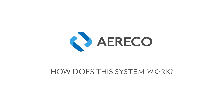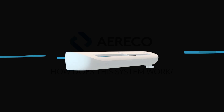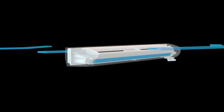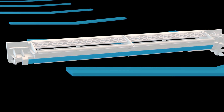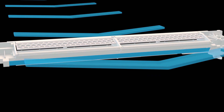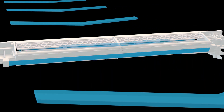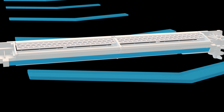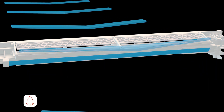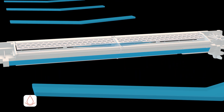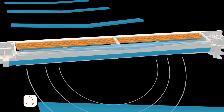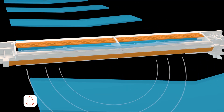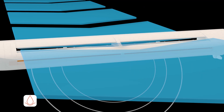How does this system work? The Aérico humidity-sensitive sensor exploits a natural physical phenomenon. Its special textile fibres extend more or less depending on the amount of contact with moisture, thus operating without electricity. This sensor operates one or more flaps, thus modulating the air flow totally automatically.